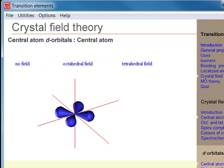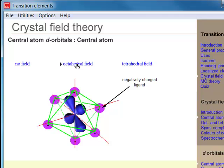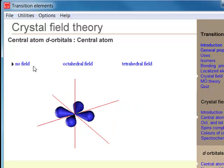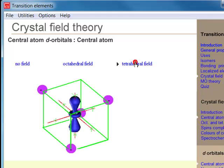Transition metal chemistry is dominated by the d-electrons that can occupy the 5 d-orbitals. Here is shown the 5 d-orbitals of the free central atom, also the 5 d-orbitals in the tetrahedral field, and the 5 d-orbitals in an octahedral field.